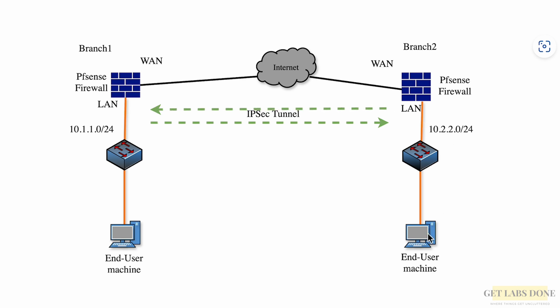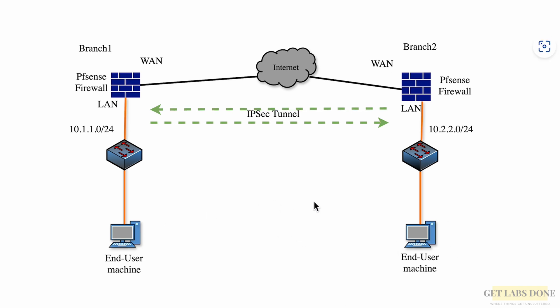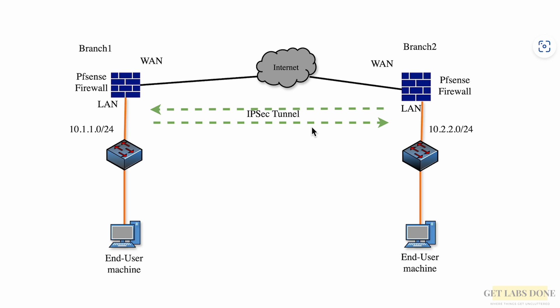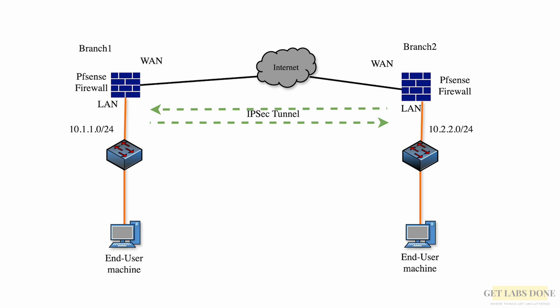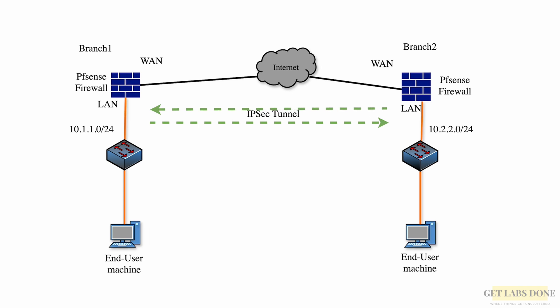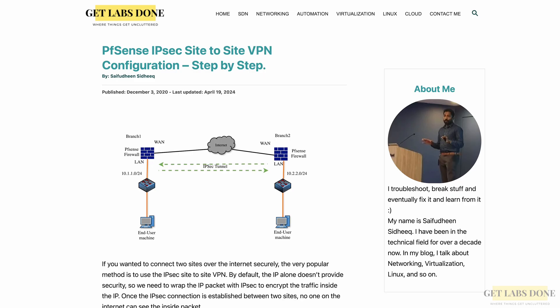The LAN connectivity at each firewall is working fine and the LAN users can reach the internet. However, if Branch 1 wants to talk to Branch 2, it doesn't work. We are going to fix that by setting up an IPsec VPN. If you have any questions or suggestions on topics you'd like me to cover, please let me know in the comments below.